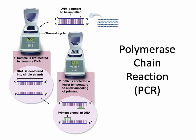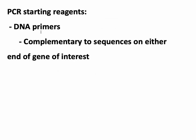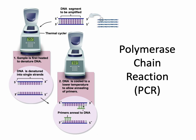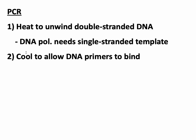Now we've got our single-stranded template. Step two: we cool the whole thing down — around 55 degrees Celsius. These lower temperatures allow the DNA primers to bind to the DNA. This is what I meant earlier when I said the primers are complementary to sequences on either end of the gene of interest. You have to know the sequence of your gene to do any of this. One primer has been specifically designed to bind at one edge of your gene of interest, and the other binds at the other end — not in the middle. Step two: cool to allow the DNA primers to bind where they have been designed to bind.